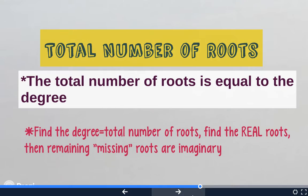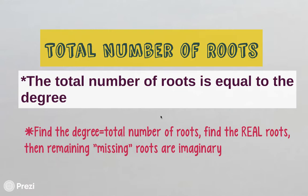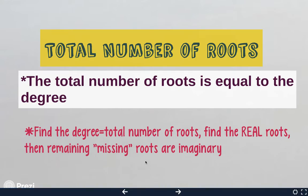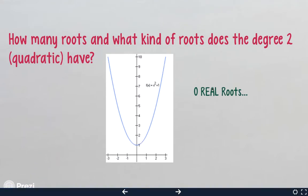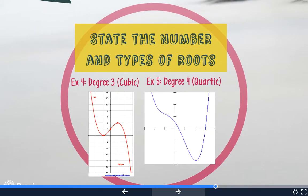There are things called imaginary roots or imaginary zeros that do exist but you cannot see them on a graph. If you have a graph, count up all the real roots, and whatever's left over will be the imaginary roots. If you add up all the real roots and all the imaginary roots, they will equal the degree. So for this graph with zero real roots and degree 2, it has two imaginary roots. In example problems 4 and 5, you'll find out how many real and imaginary roots graphs have.